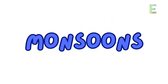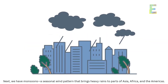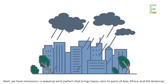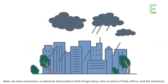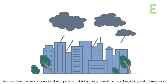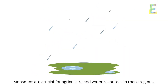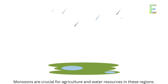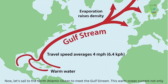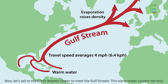Next we have monsoons — a seasonal wind pattern that brings heavy rains to parts of Asia, Africa, and the Americas. Monsoons are crucial for agriculture and water resources in these regions.